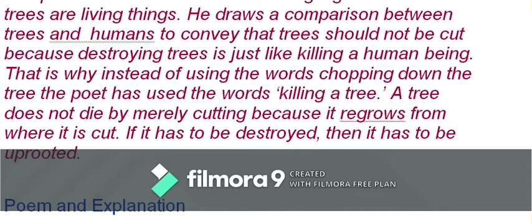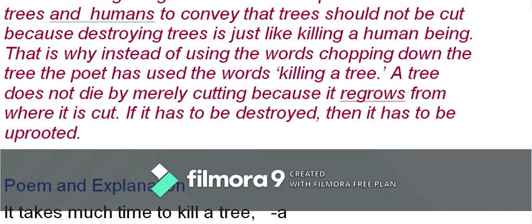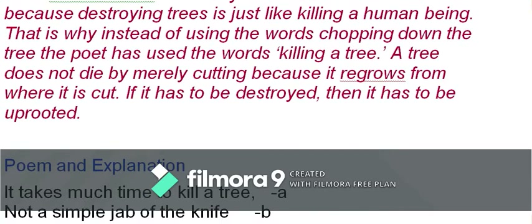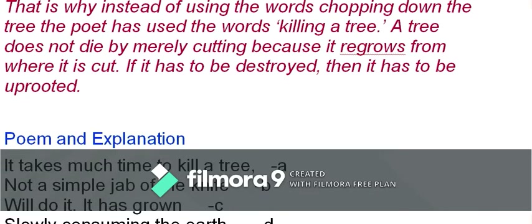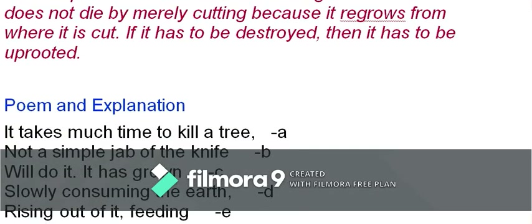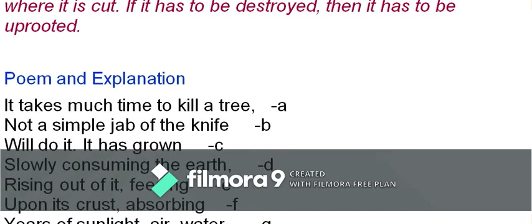A tree does not die merely by cutting it down because it regrows from where it is cut. When you chop down a tree, the stump remains, and from it new shoots and branches grow. In order to kill a tree you need to uproot it, and that uprooting process is a very prolonged one — this poem explores that process.